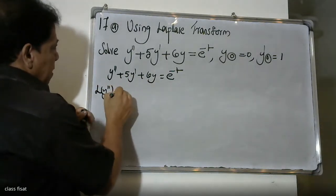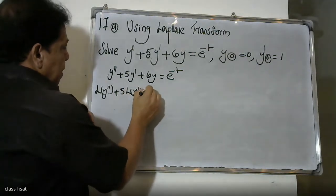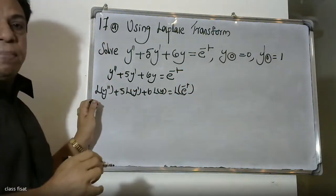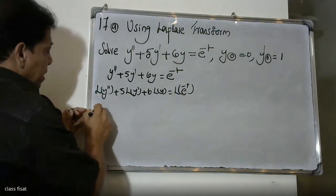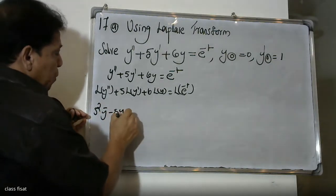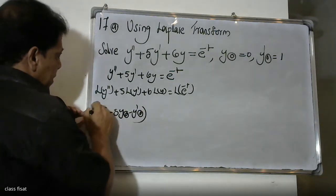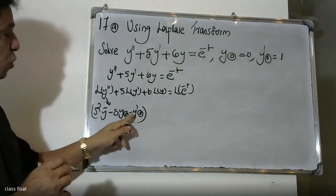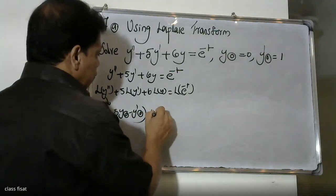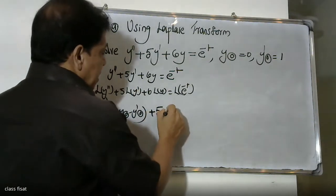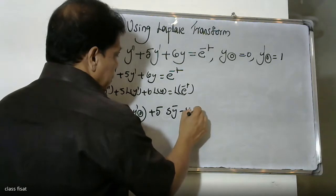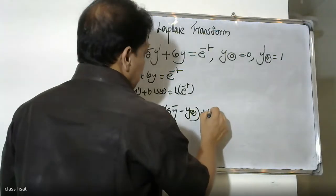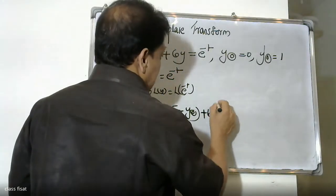L of y double dash plus 5y dash plus 6y, equal to L of e raise to minus t. Apply the Laplace formula. L of e raise to minus t equals 1 by s plus 1.